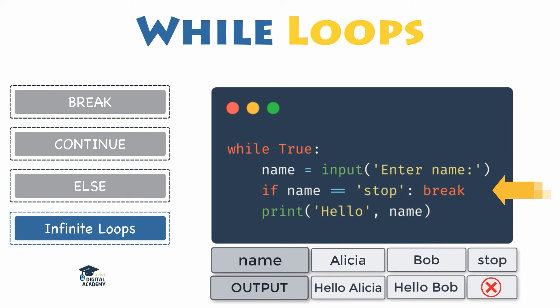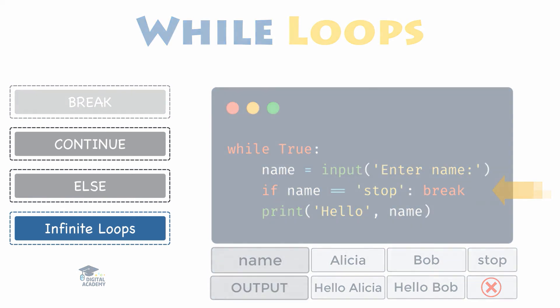In the above example, this code will run indefinitely, ask the user for a name, and exit the infinite loop as soon as it encounters stop. Otherwise, it will print out the name that the user typed in.